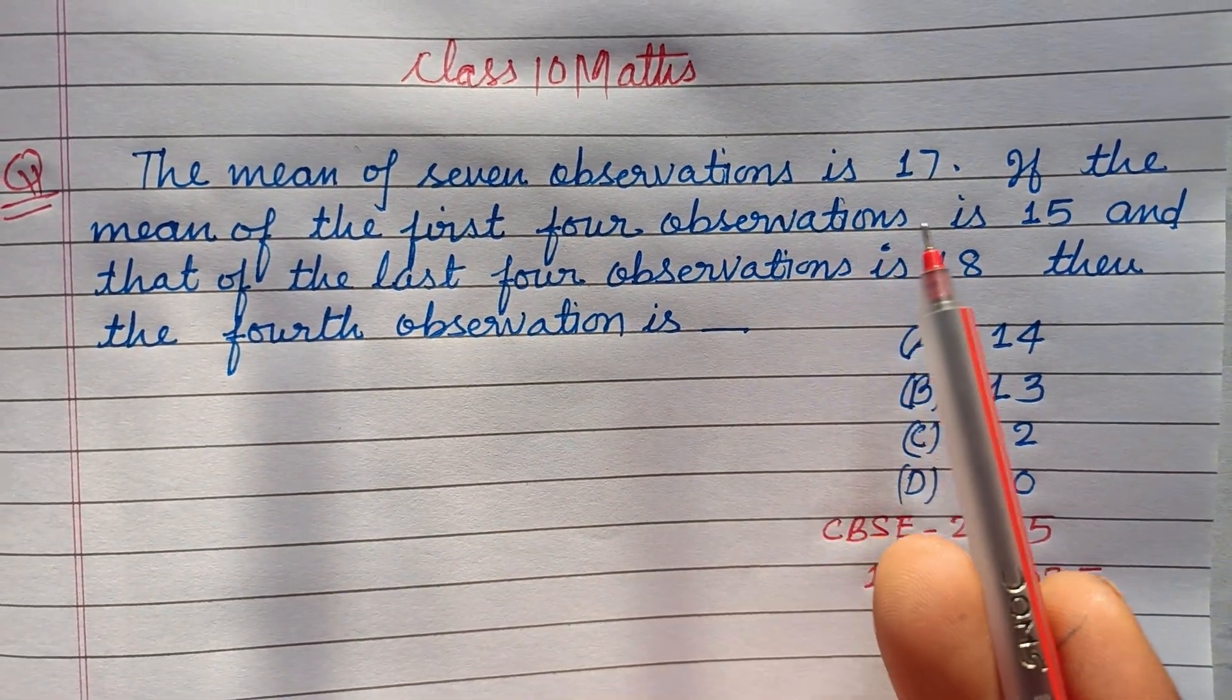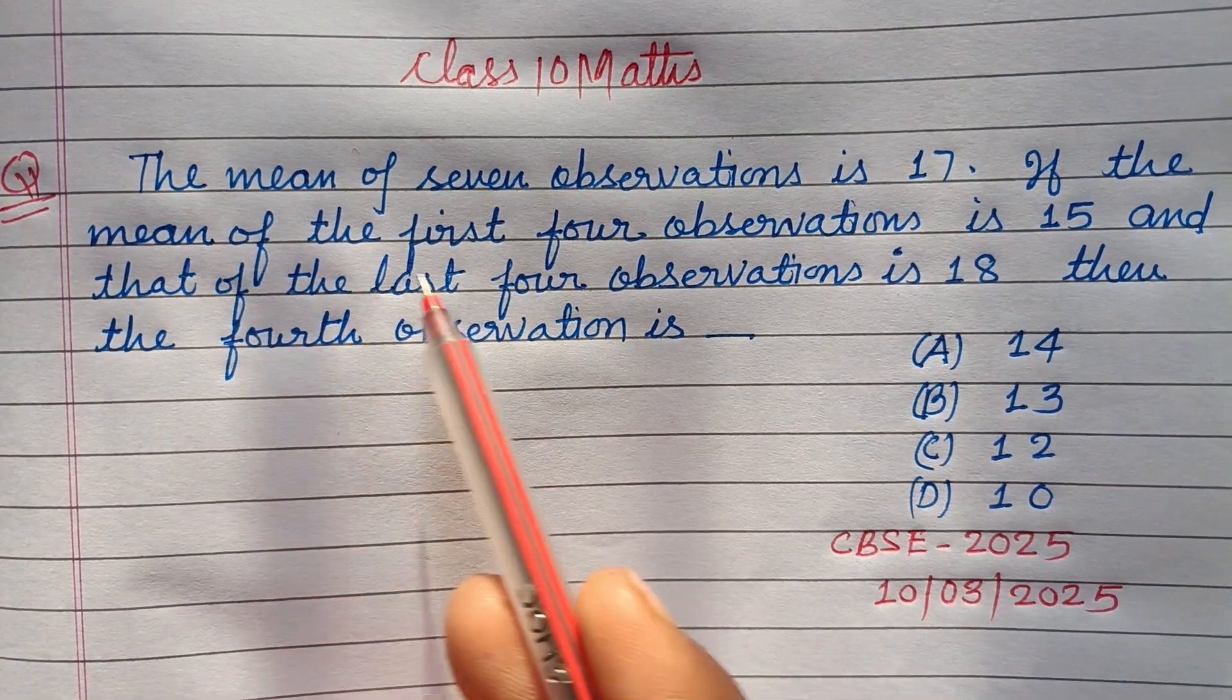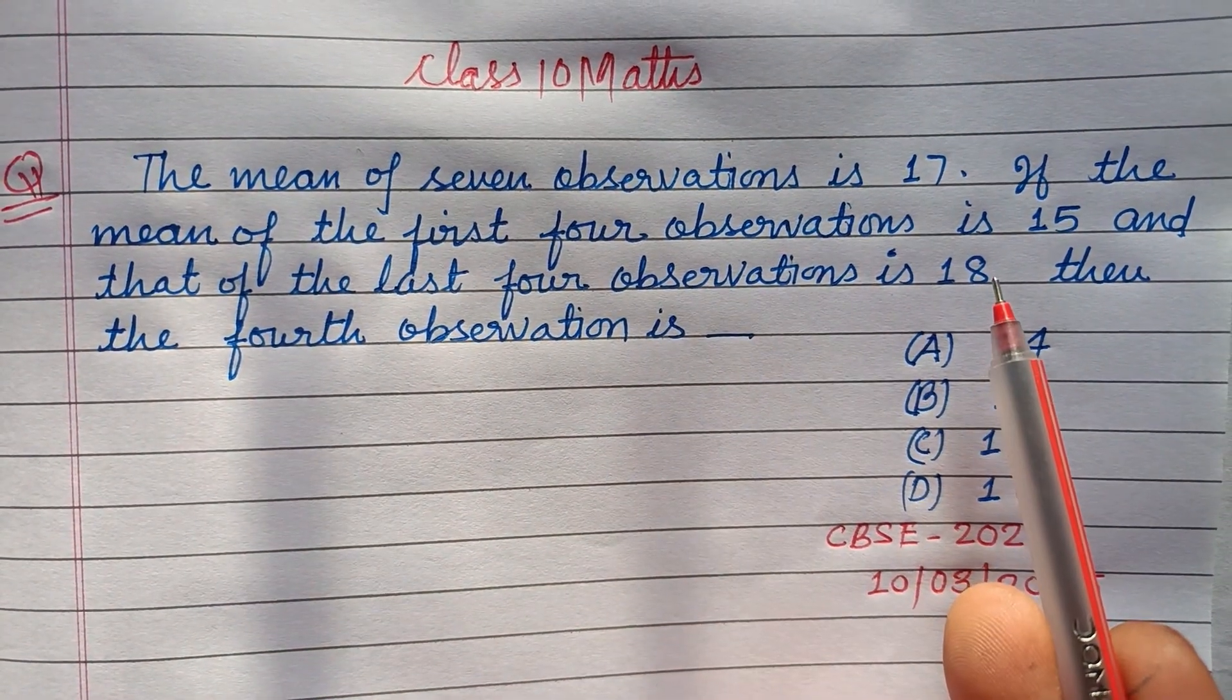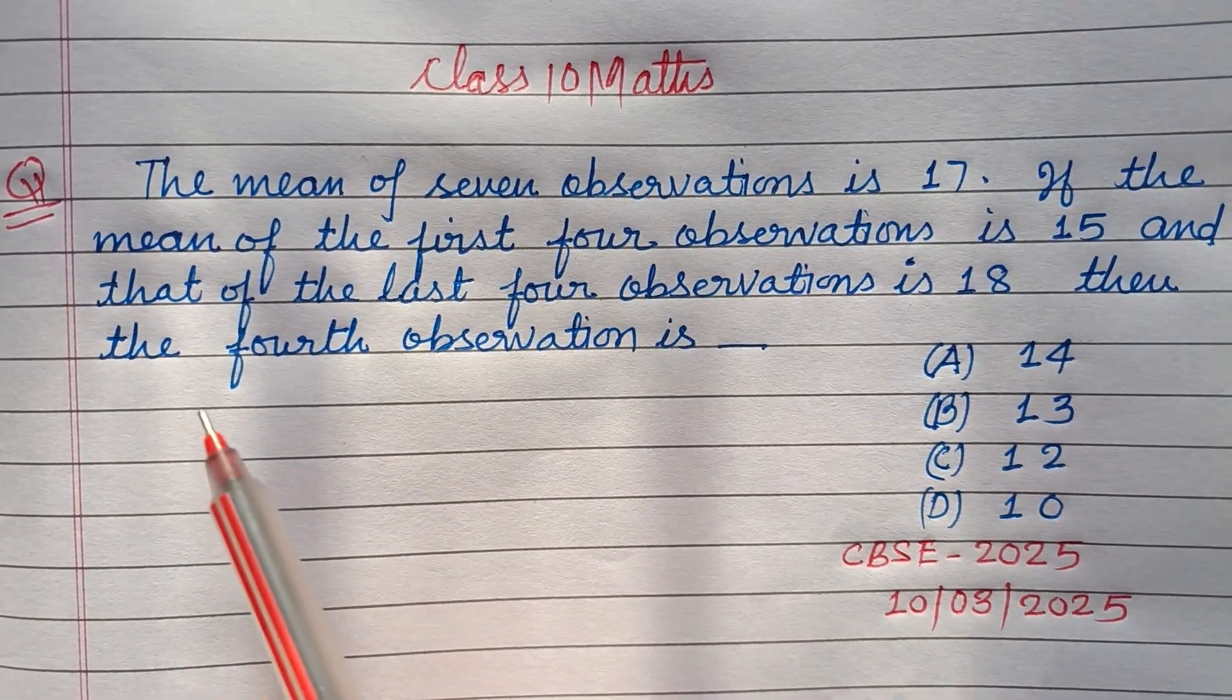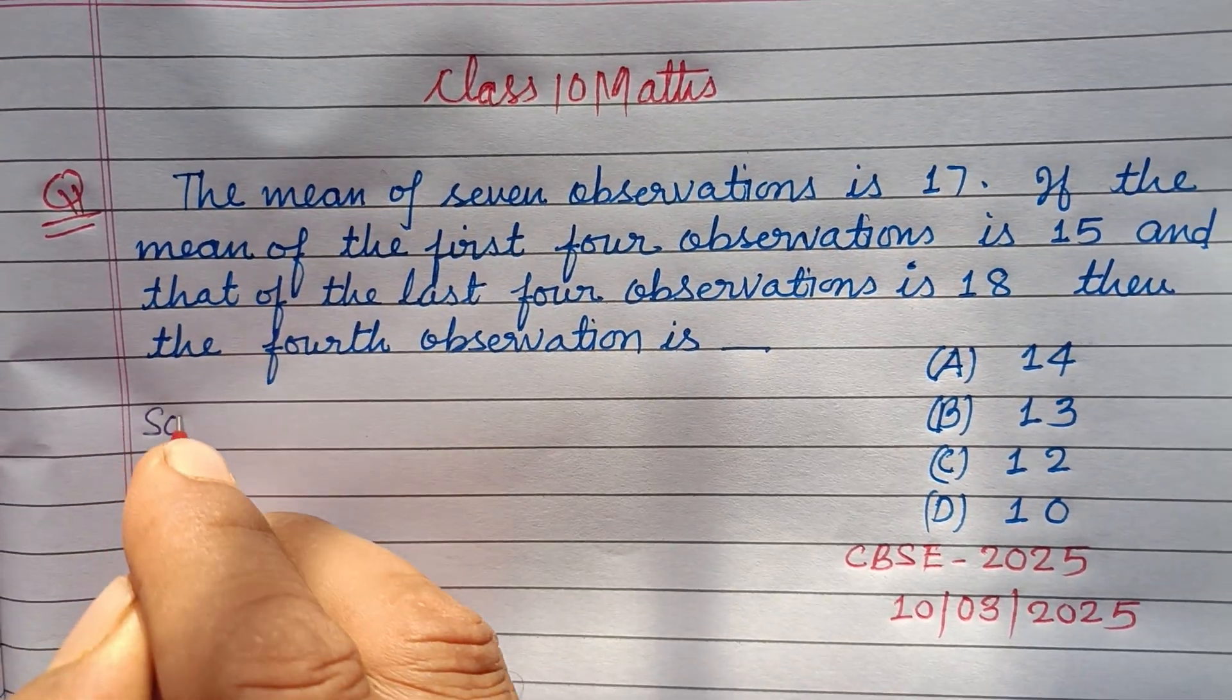The mean of 7 observations is 17. If the mean of the first 4 observations is 15 and that of the last 4 observations is 18, then the 4th observation is...